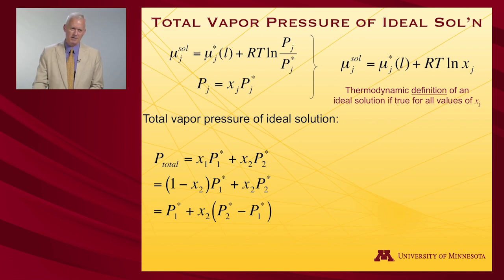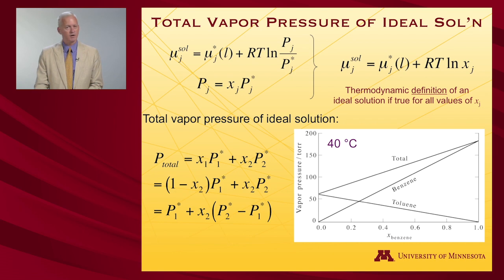That one's maybe easier just to see. So if I mix benzene and toluene, down here is mole fraction benzene. I'm starting with no benzene at all, in which case the total vapor pressure is here and it's pure toluene. If I have 100% benzene, the vapor pressure is here.